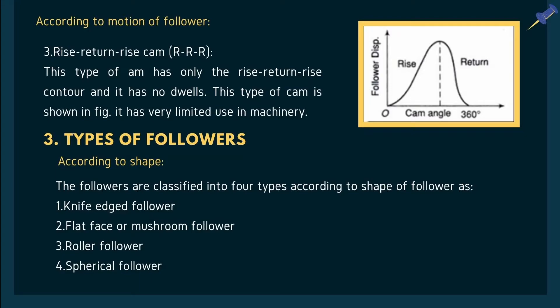I am Sakshi Karokhe, and I am going to talk about the follower, its types, types of follower motion, and the displacement diagram. The follower is the member which converts rotary motion of the CAM into reciprocating or oscillating motion — when the cam rotates, the follower moves up and down. This CAM and follower mechanism is used in many applications like inlet and exhaust valves of IC engines, paper cutting machines, and lathe machines.